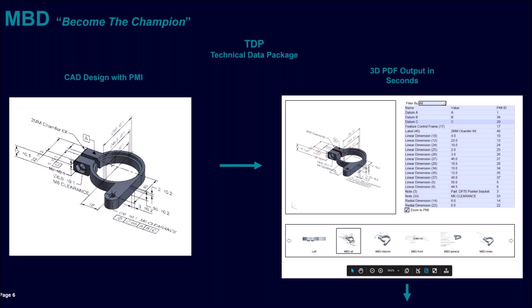Here we have an example of a clamp with PMI on it so that you can see it. In NX or in Adobe, you'd be able to rotate this model and zoom in to analyze and look closer at the PMI. What you're seeing on the right side is what you could obtain through NX and the technical data package to output this PMI and information, whether to internal customers, external suppliers, or whatever. If anyone's interested, after the meeting send us a note and I will share with you a sample PDF — you'll hear more about what that PDF will contain.